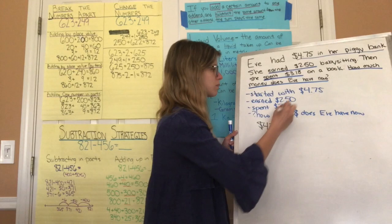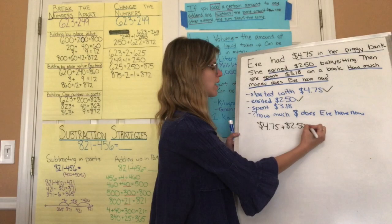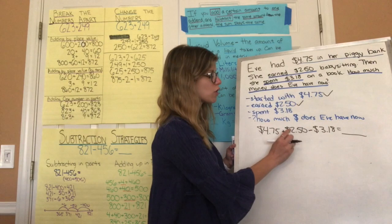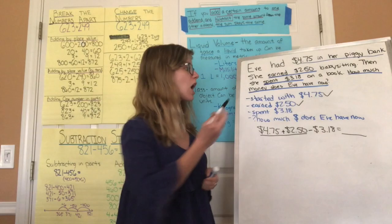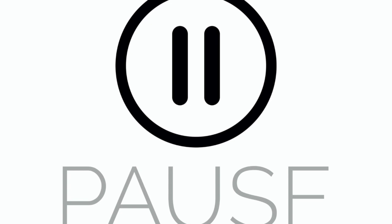When writing the equation, I see that she started with four dollars and seventy-five cents, and then she earned two dollars and fifty cents — earning means she's going to have more money — plus two dollars and fifty cents, and she spent three dollars and eighteen cents. This is a multi-step problem: first we're adding, then we're subtracting. I want you to solve for the whole equation and find out how much money Eve has now.